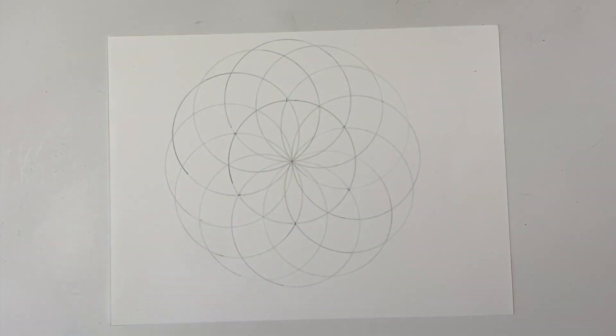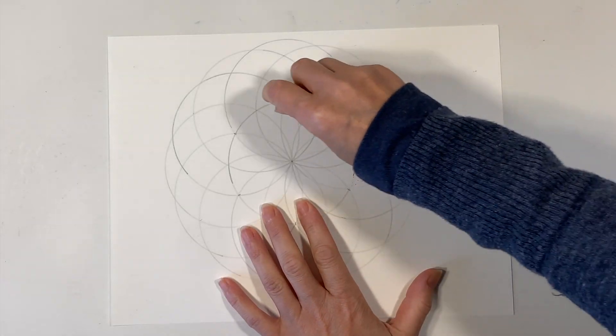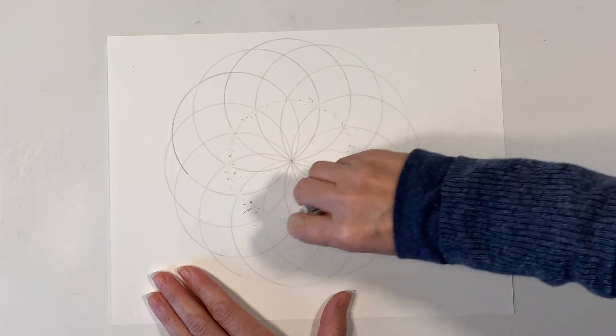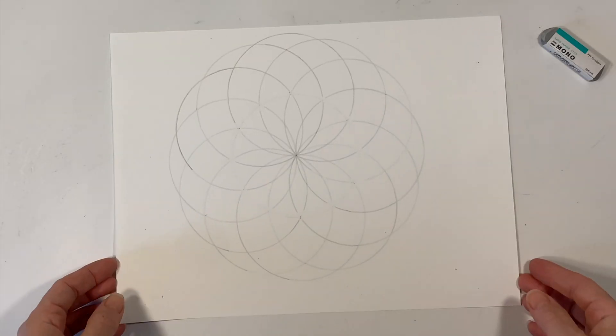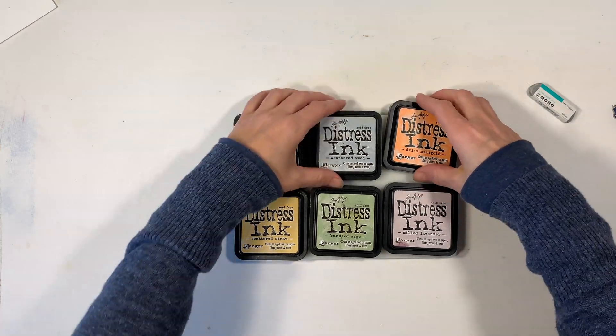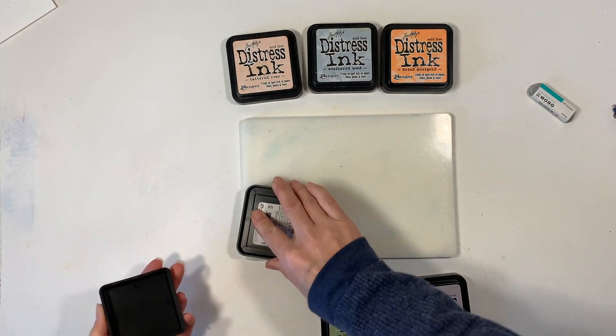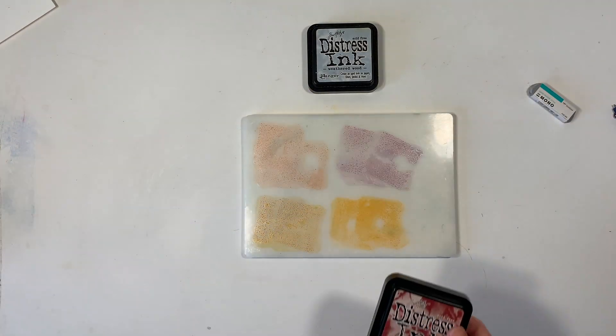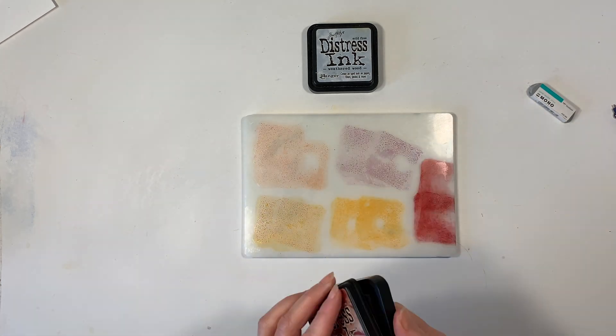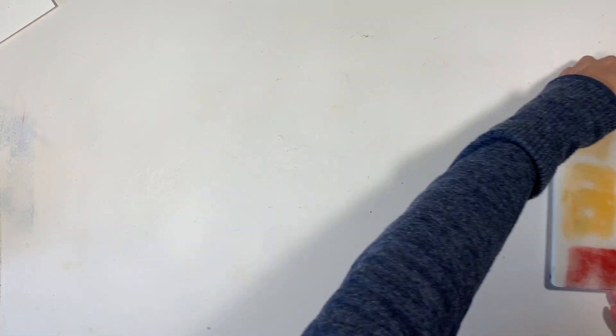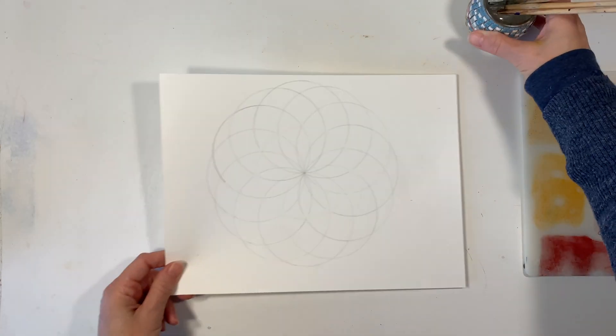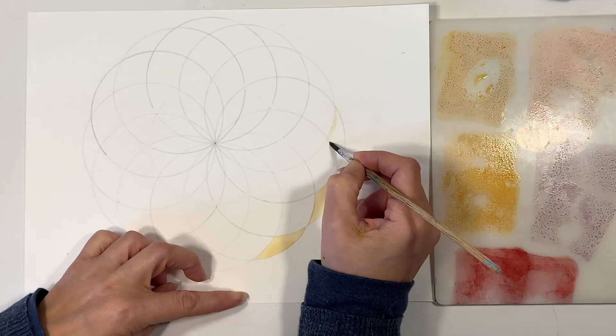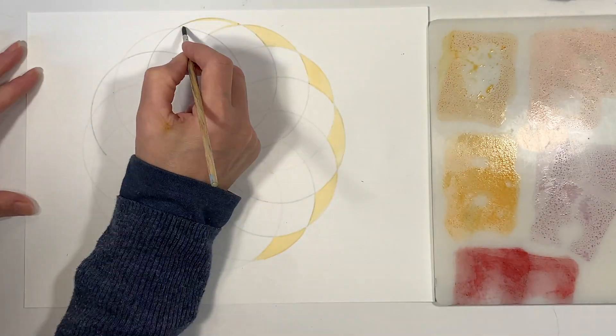Once we have our 12 fold symmetry it's time to erase. Now you don't have to erase your original circle but I chose to and then we're going to watercolor them using distress inks. These are ink pads that I'm going to squish down onto a non-porous surface and I'm going to use them as watercolor paints. I'm going to put this aside. I need some water and a paintbrush and then the fun begins. We're going to watercolor this image.